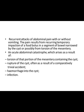An acute abdominal catastrophe may arise as a result of either torsion of that portion of the mesentery containing the cyst, rupture of the cyst often as a result of a comparatively trivial accident, or hemorrhage into the cyst or infection into the cyst.